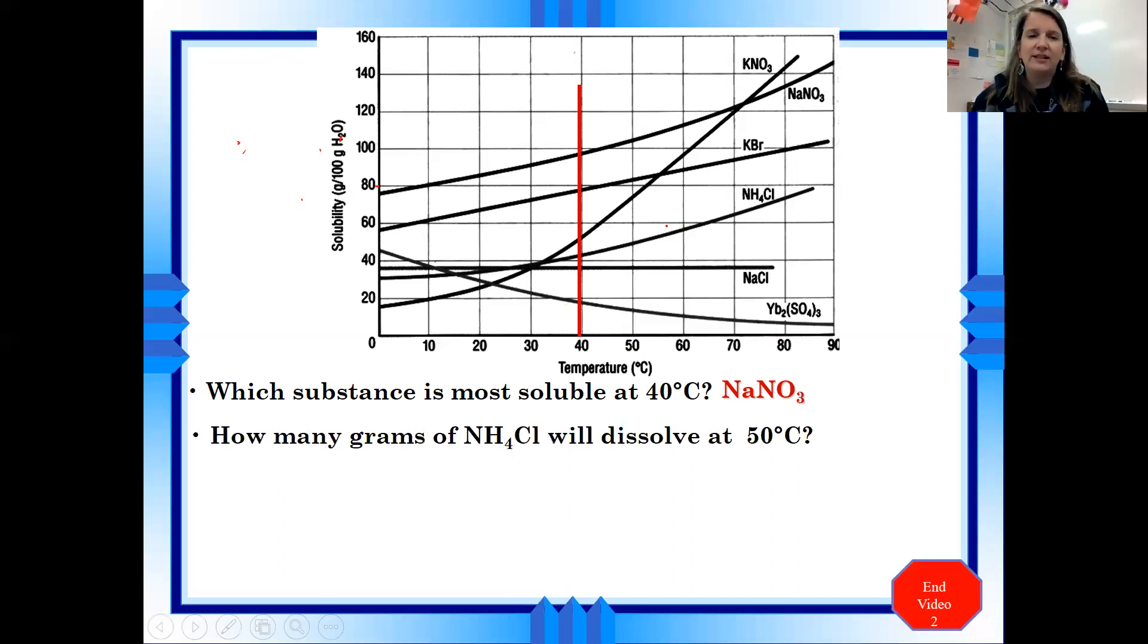We could get a question like this. How many grams of ammonium chloride will dissolve at 50 degrees? So if you get a question like that, you want to go to 50 degrees and find ammonium chloride. So ammonium chloride is right over here. It's this line. You want to find where 50 degrees meets that line. Then you're going to go over to the left to see how many grams are going to dissolve at that temperature.